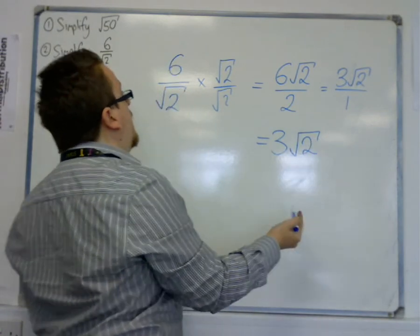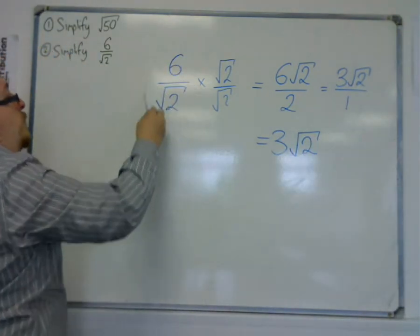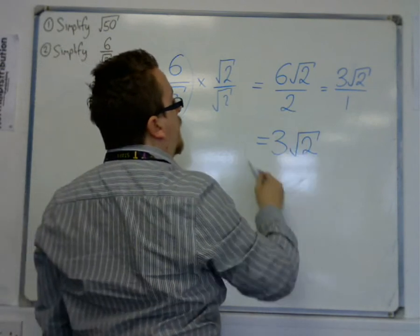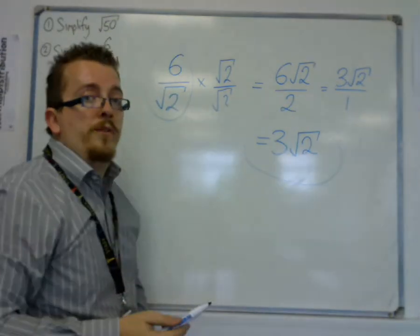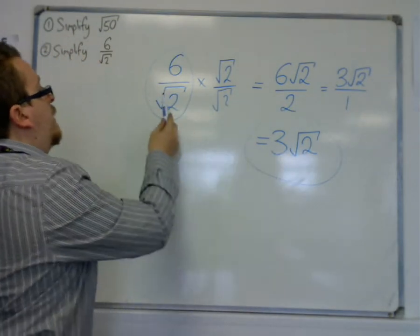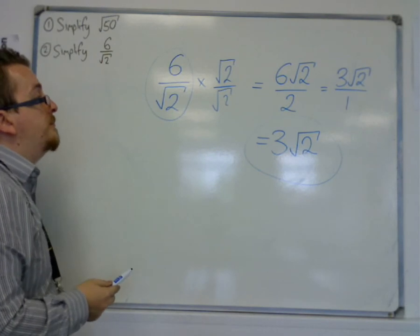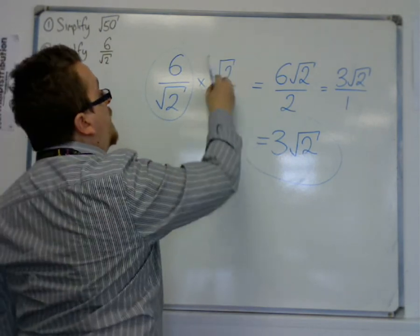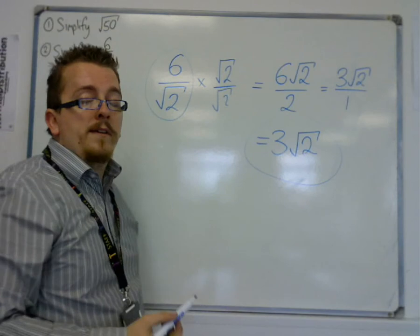So that is how we can make 6 over root 2 become 3 root 2. These are equivalent to one another. And it's all using this little trick of multiplying by 1.